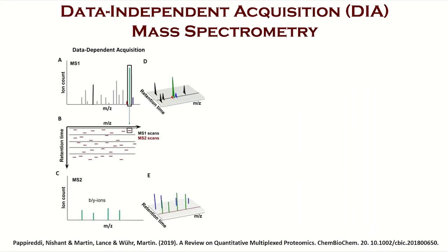In traditional data-dependent acquisition, also called DDA, a proteomic sample is digested into peptides, ionized, and then analyzed by mass spectrometry. Peptides with precursor intensities above the noise threshold are selected for fragmentation, thus generating tandem mass spectra, termed as MS-MS spectra. These MS-MS spectra can be matched to peptide sequences in a database.